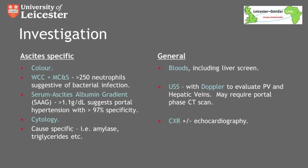Following your clinical history and examination, the next step is your basic investigations, which will confirm the presence of ascites and help differentiate the cause. You want to get a panel of blood tests, including those looking at various causes of liver disease. An ultrasound scan, particularly with Doppler, is extremely useful to evaluate not only the presence of ascites but will also look at the portal vein and hepatic veins for any clot. Sometimes, due to the volume of ascites and scarring within the liver, you might require a portal phase CT scan to truly evaluate the hepatic vasculature.